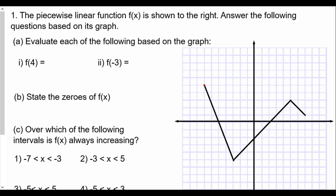Question number one — we have a piecewise linear function f(x) shown on the graph. Answer the following questions based on this graph. First, evaluate f(4). When they say f(4), they're really asking: what is the value of y on the graph when x equals 4? We find x = 4 on the graph, and the y value there looks like it's going to be 1.